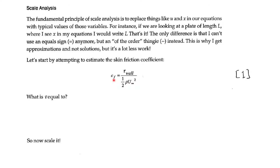Here's the way scale analysis works. When you have an equation and you see a variable like u (velocity in the x-direction) or x (the x-coordinate), you replace those variables with a typical value or a constant for your particular case. All of your equal signs turn into squiggles, meaning things are on the order of — not exactly equal. That's scale analysis. It's pretty powerful and it can get us pretty far with very little effort.